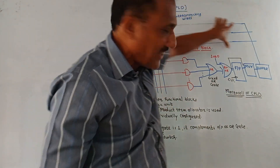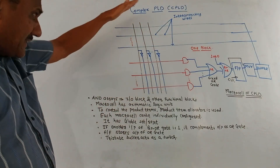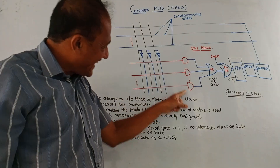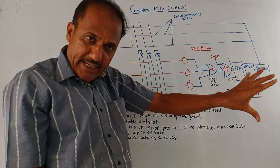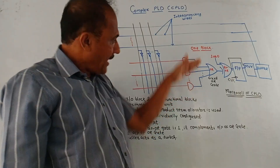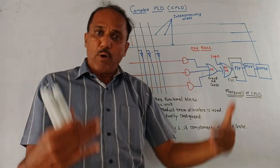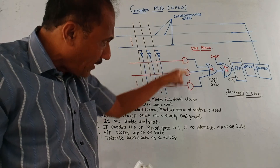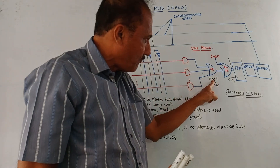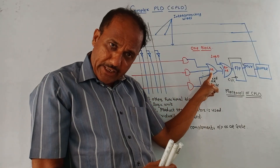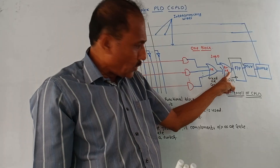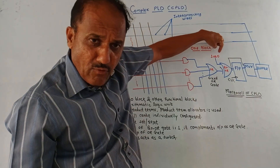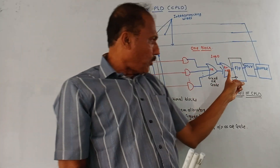Macro cells are also interconnected. The macro cell consists of a structure having N number of logical AND gates — I have shown three AND gates, and this dotted line indicates N number of AND gates are used depending on the type of CPLD. Then it has a fixed OR gate. Outputs of all logical AND gates are applied to the fixed OR gate. The output of the logical OR gate is given to one of the inputs of an XOR gate, that is exclusive OR gate.